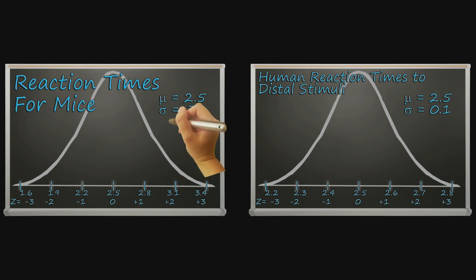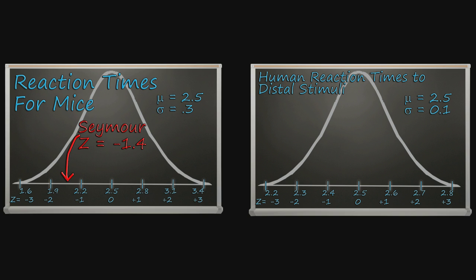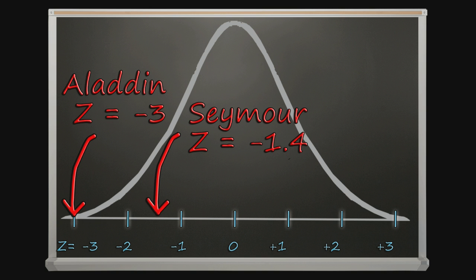Now because the mice scores have so much more variation, Seymour's score, while nothing to be ashamed of, is not nearly as impressive as Aladdin's score, even though it looks like Seymour beat Aladdin. The fact that the human reaction times have less variability makes Aladdin's score more impressive. Keep that in mind for future topics, that our sample score here is more impressive because of the relatively small variability in the comparison distribution.